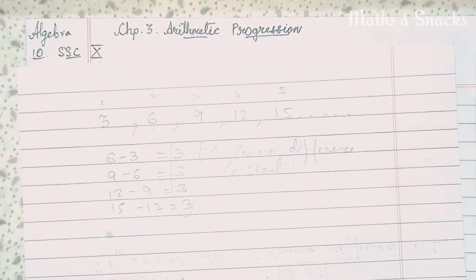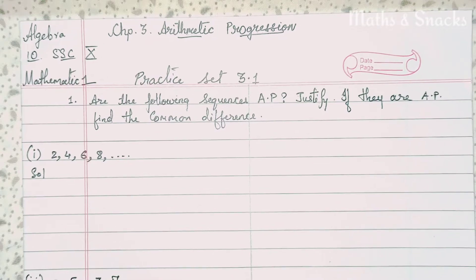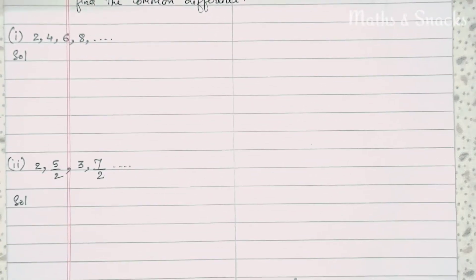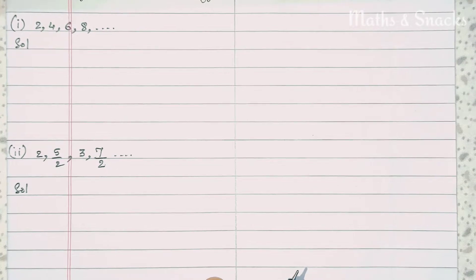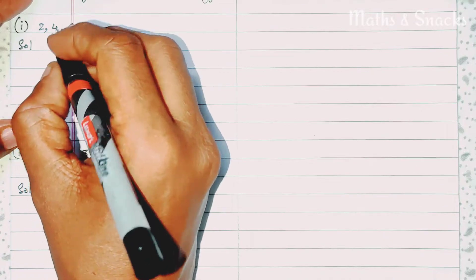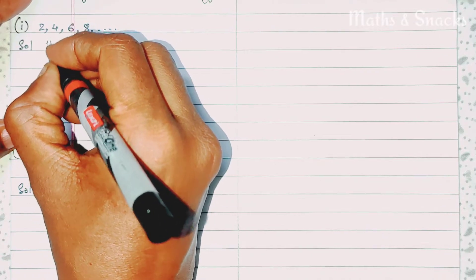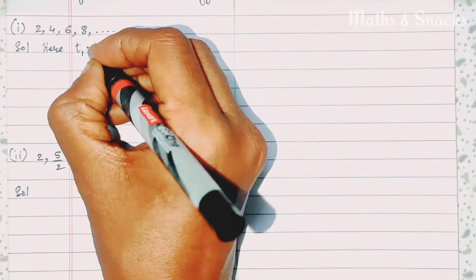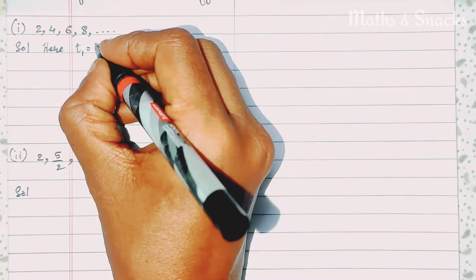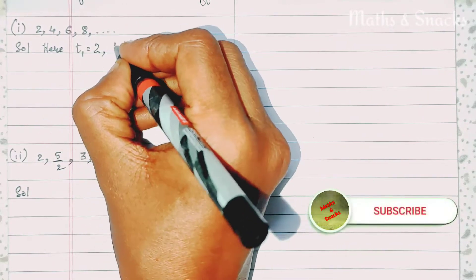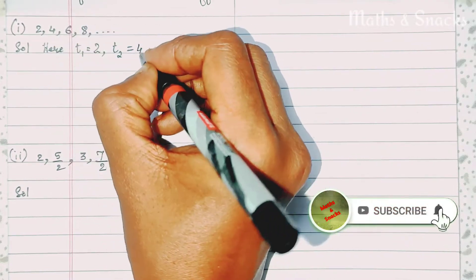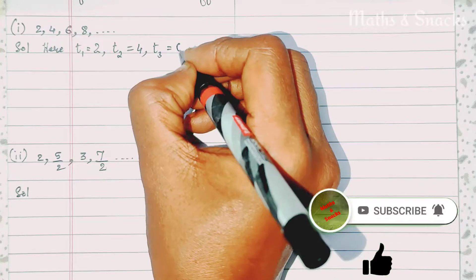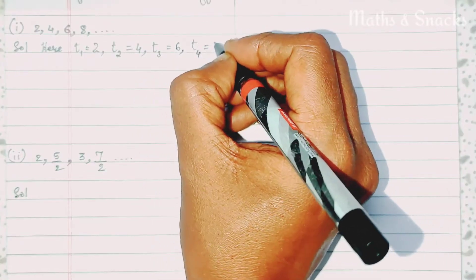Let's solve a few sums to clear the concept of arithmetic progression. In the first sum, the sequence given is 2, 4, 6, 8. We label the terms: T1 = 2, T2 = 4, T3 = 6, T4 = 8.